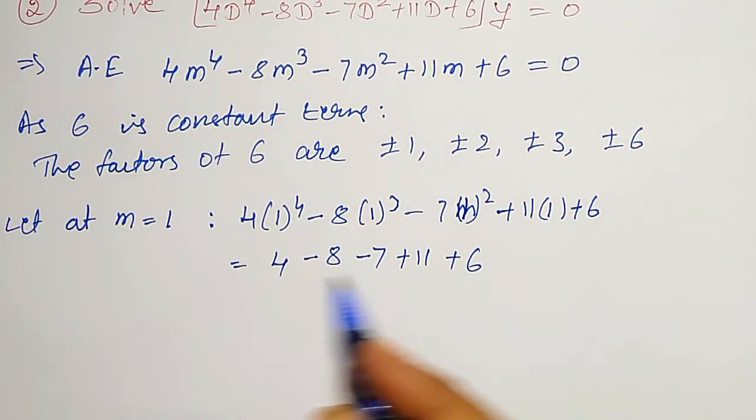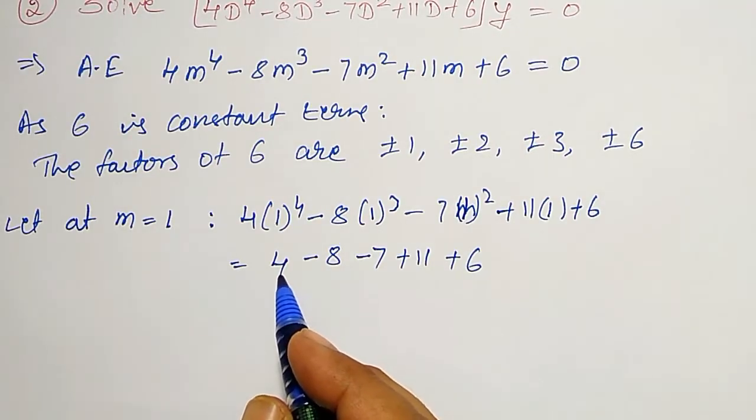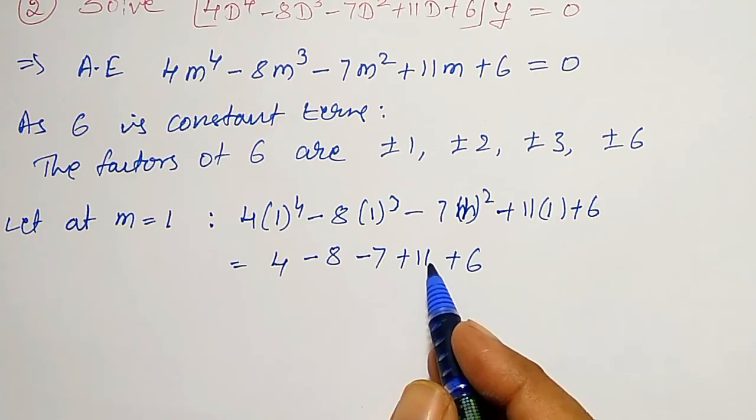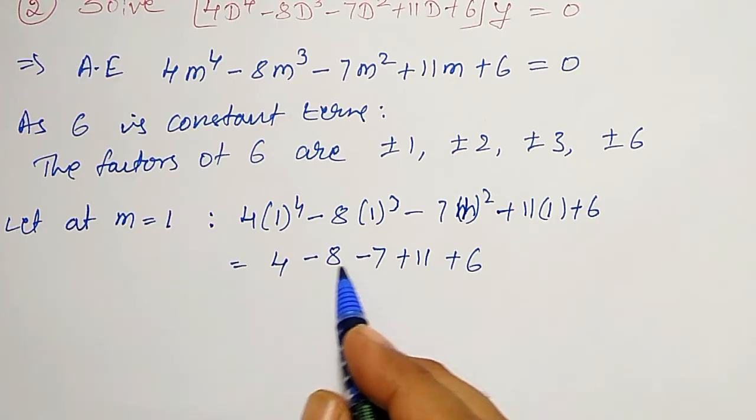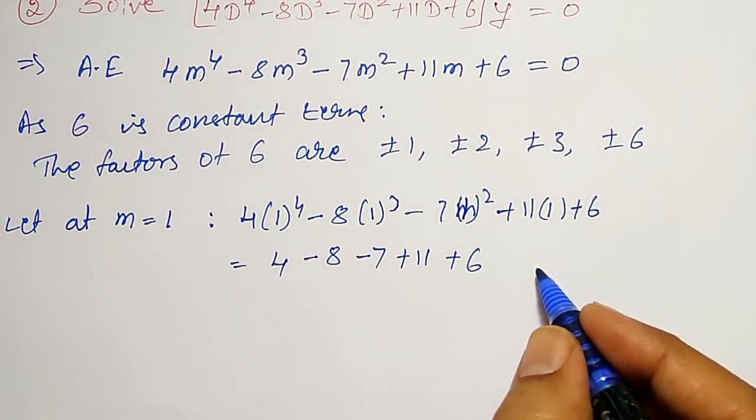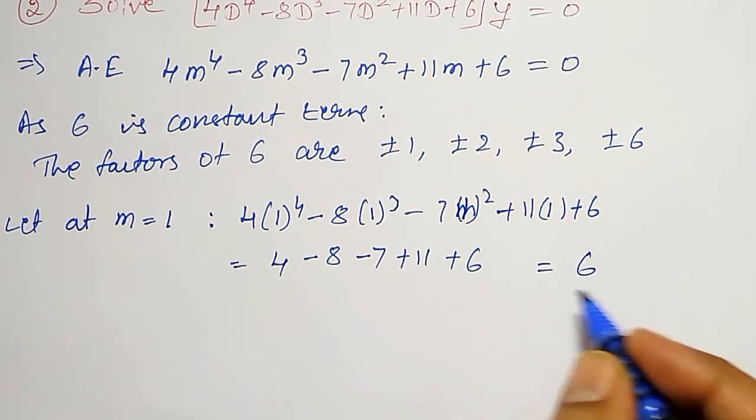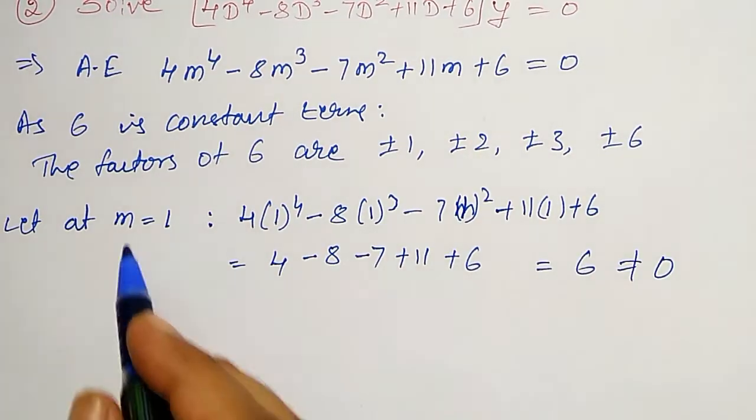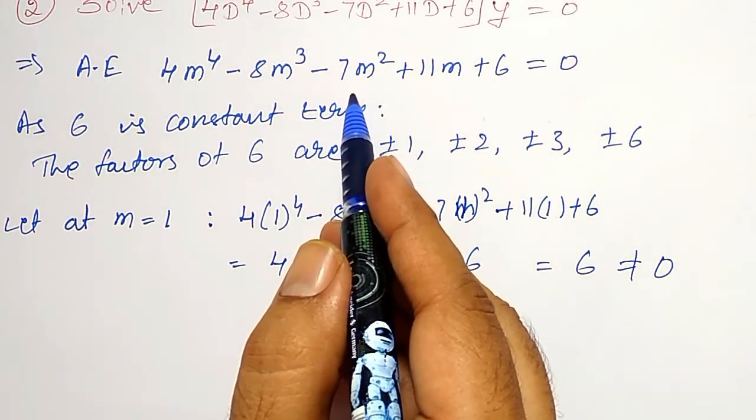Therefore, it becomes 6 + 4 = 10, 10 + 11 = 21, 21 - 15 will become 6, which is not equal to 0. Therefore, M = 1 is not the root of this equation.